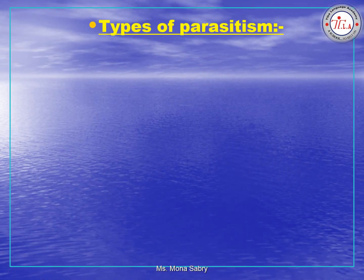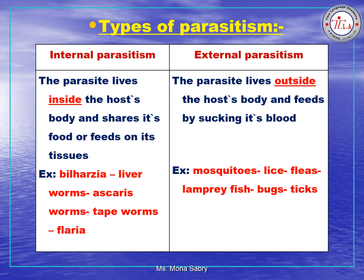Types of parasitism: internal parasitism and external parasitism. In internal parasitism, the parasite lives inside the host's body and shares its food or feeds on its tissues — for example, bilharzia, liver worm, tapeworms, and filaria. In external parasitism, the parasite lives outside the host's body and feeds by sucking its blood — like mosquitoes, lice, fleas, bugs, and ticks.